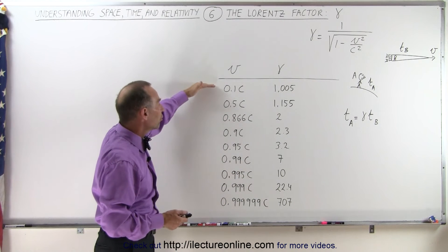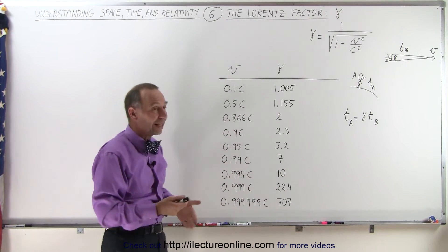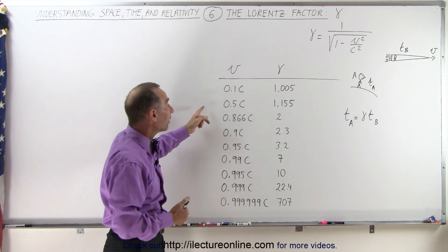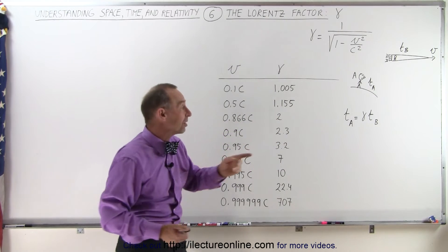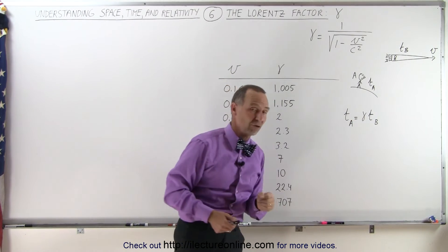As the object continues to move faster and reaches a speed of 0.5C—that's half the speed of light—the factor is 1.15, so you see about a 15% difference in the time measured by A compared to the time measured by B.